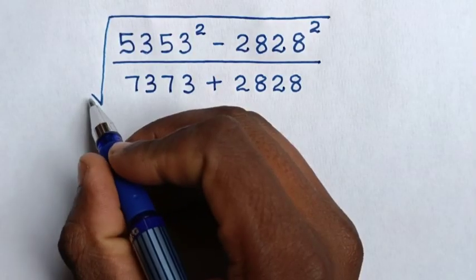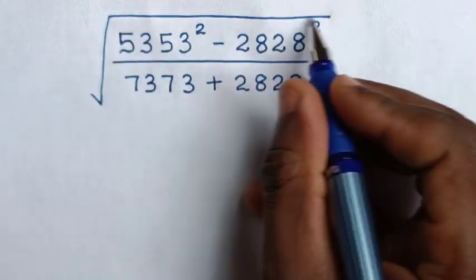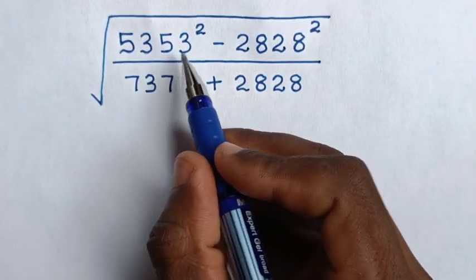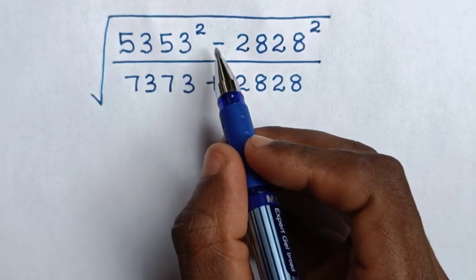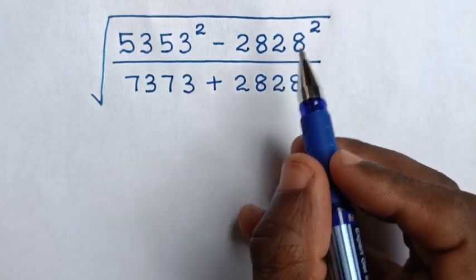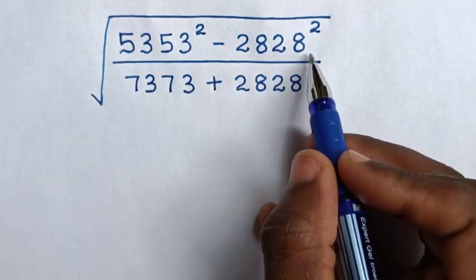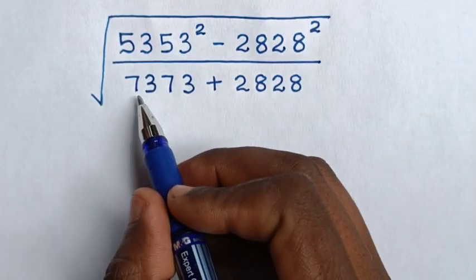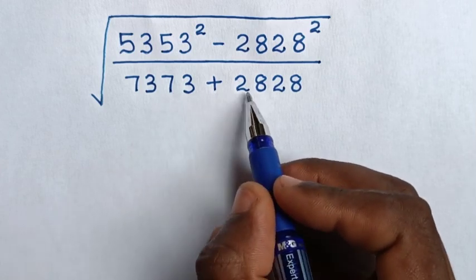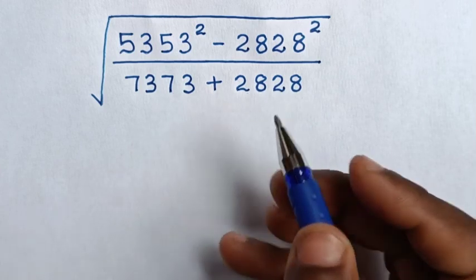Hello. How to solve square root of 5353 squared minus 2828 squared, over 7373 plus 2828?